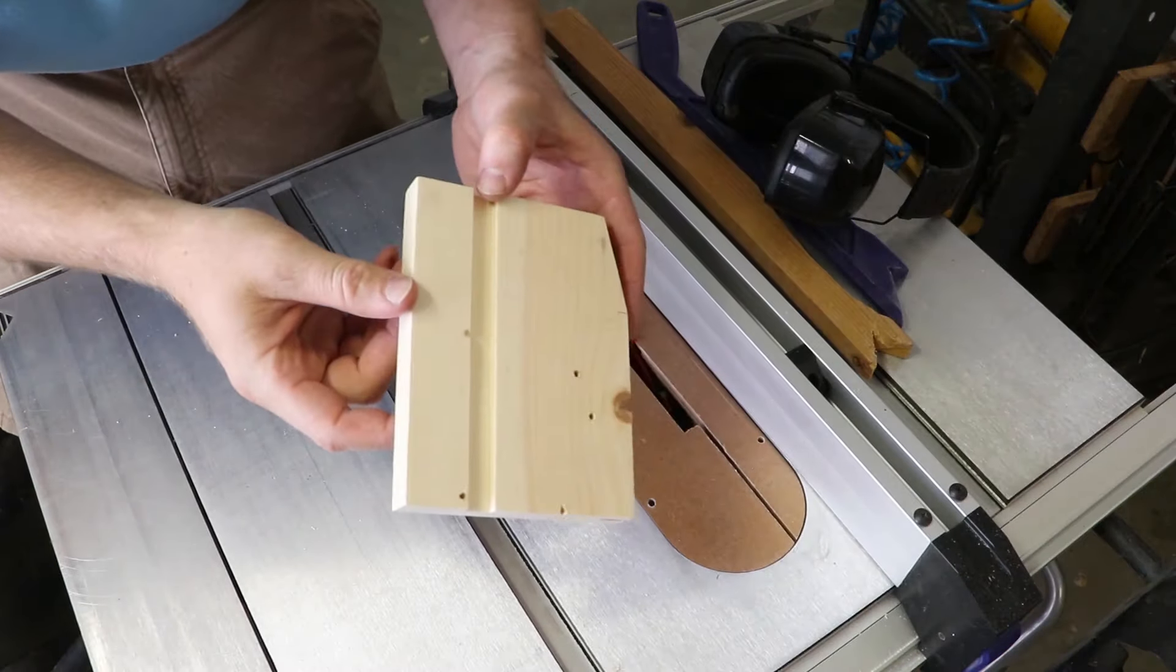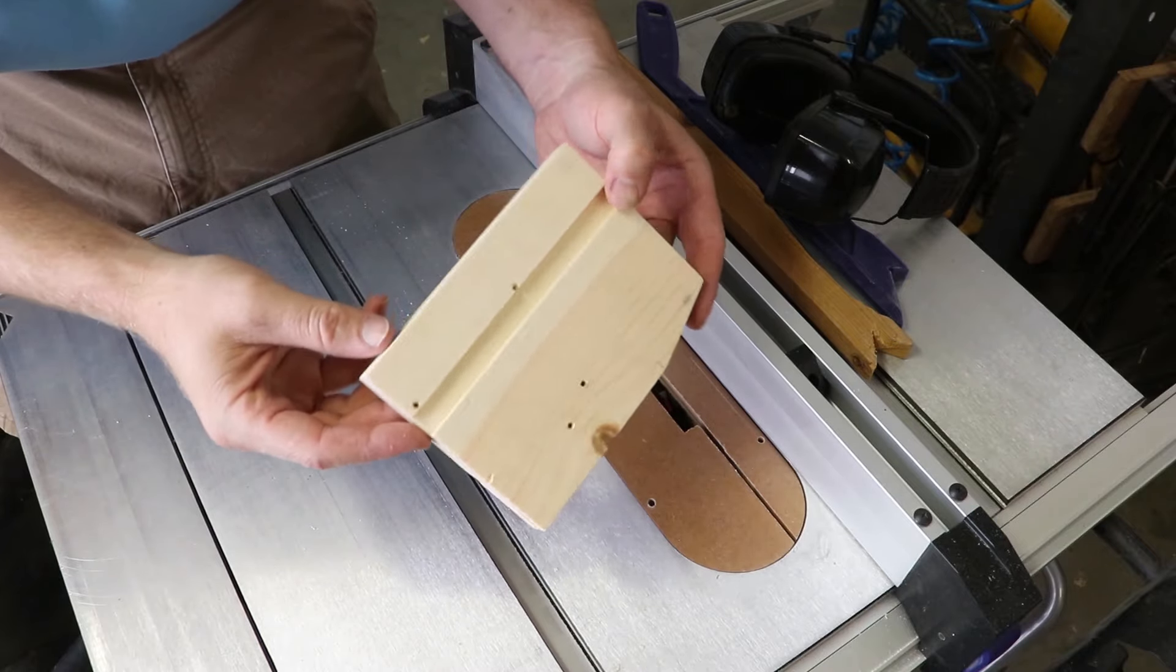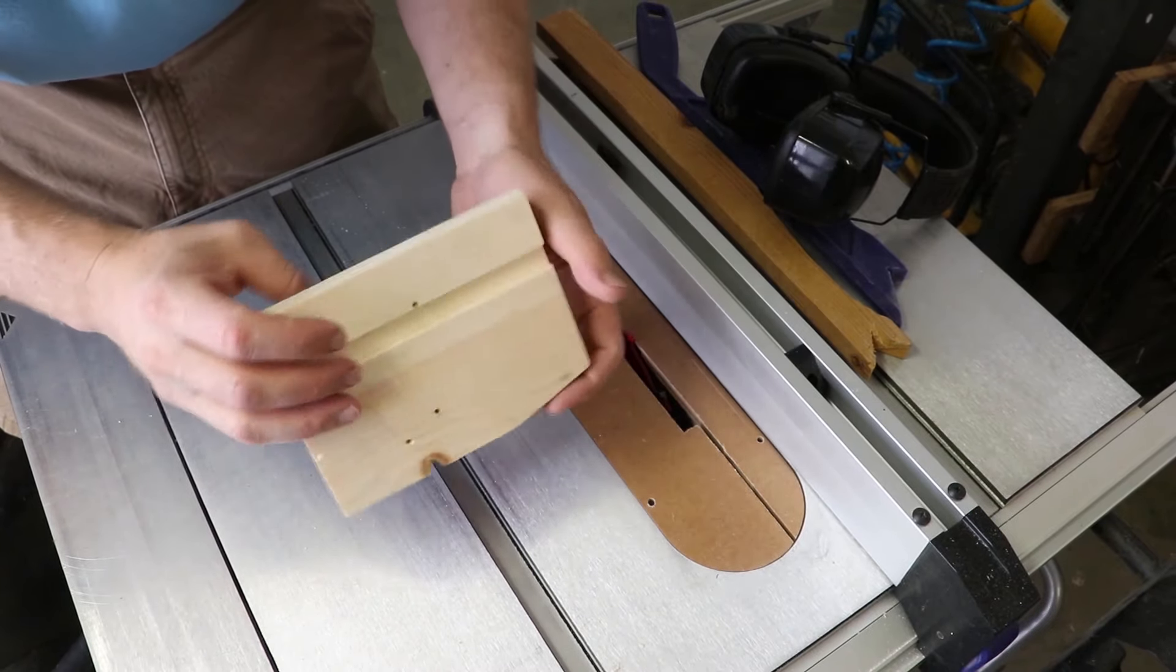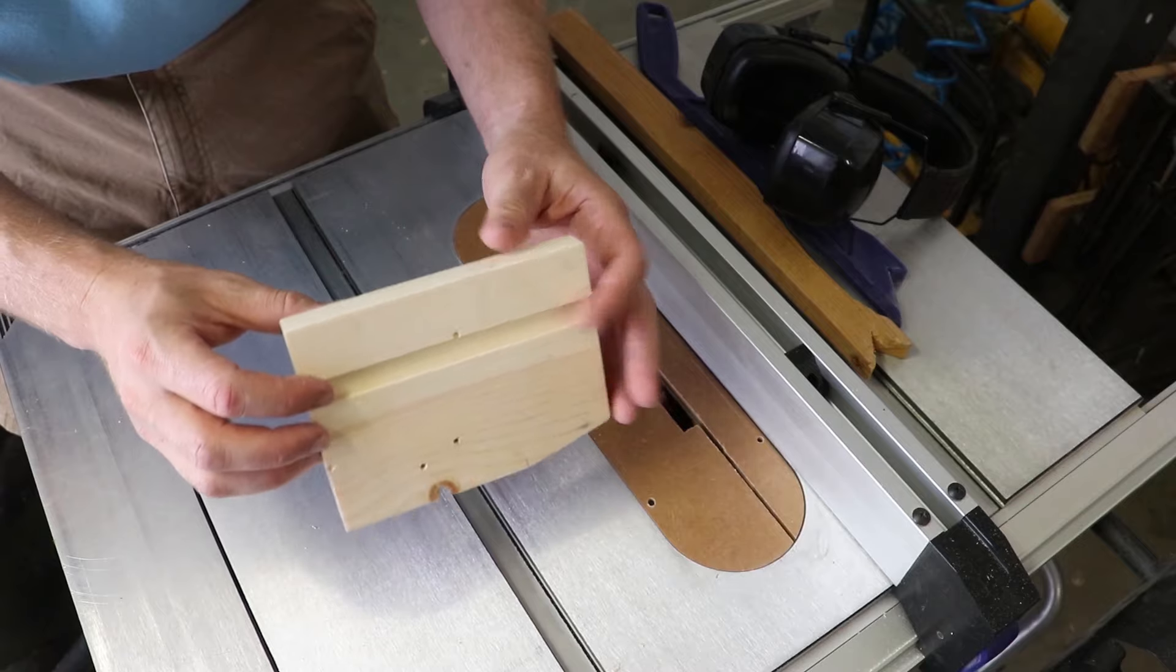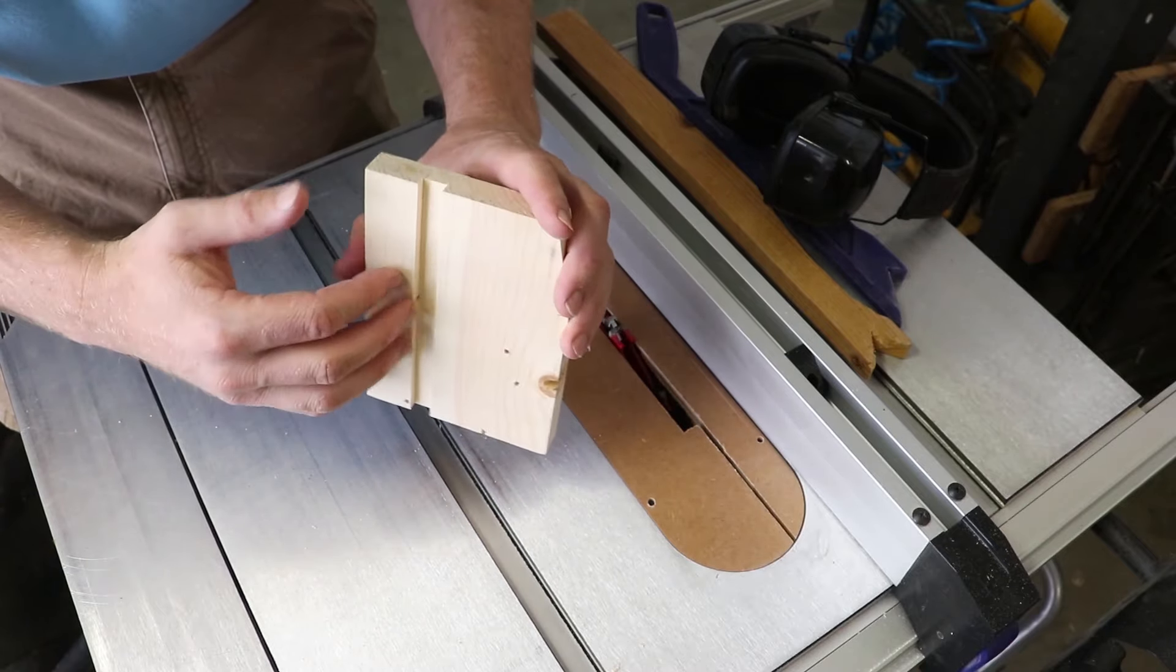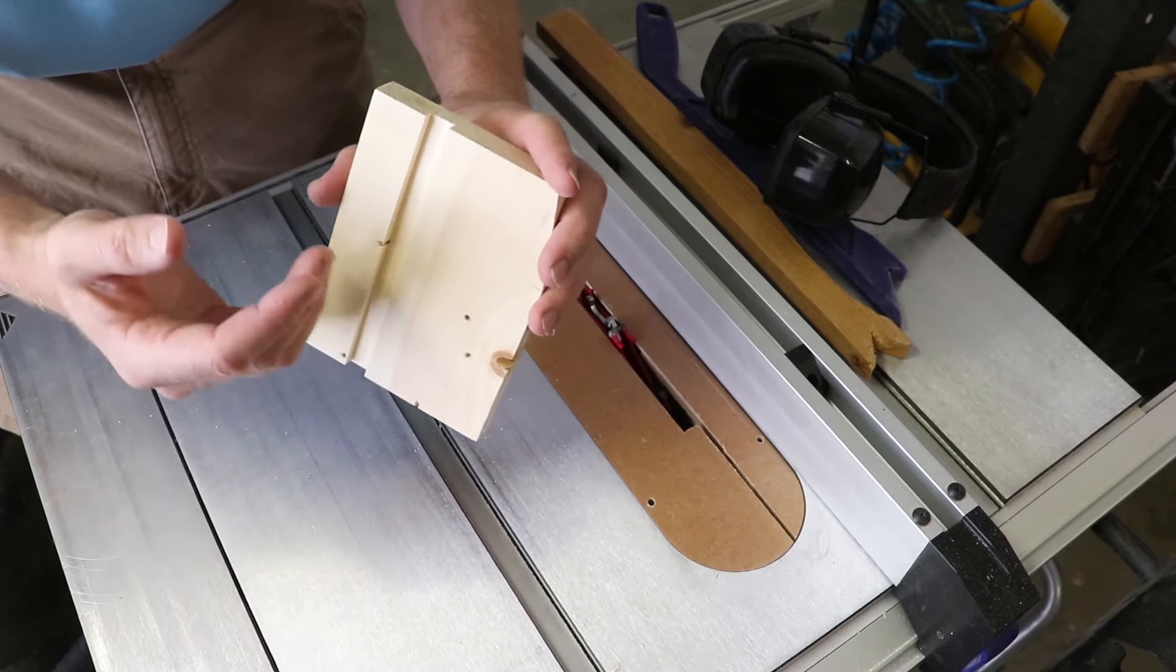And there we have it, a nice dado groove in this board. We could use that for all sorts of different things, shelves or cubbies and boxes.